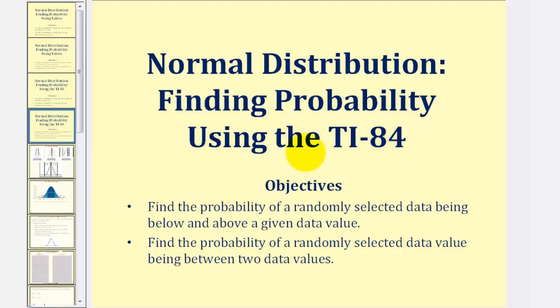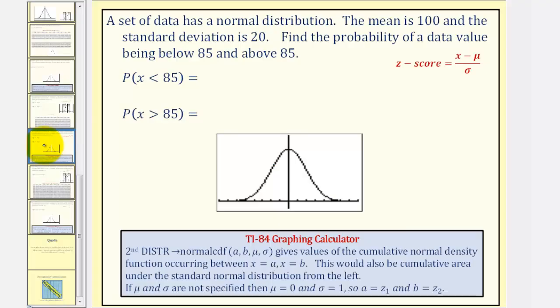Welcome to a lesson on how to use the TI-84 graphing calculator to find the probability of a randomly selected data value being between and above a given data value in a normal distribution. We'll also find the probability of a randomly selected data value being between two data values in a normal distribution. Let's look at our first example.